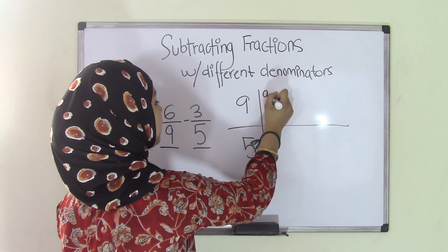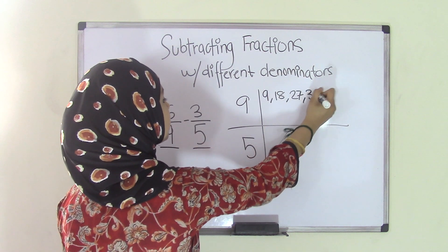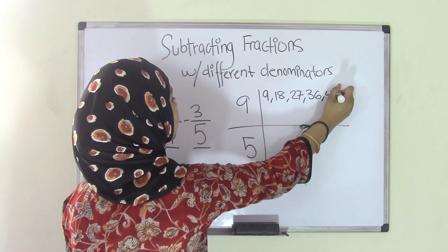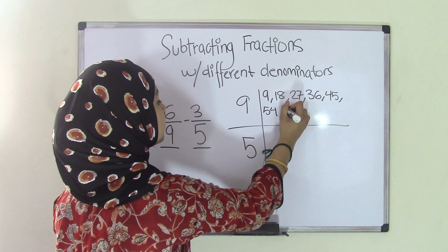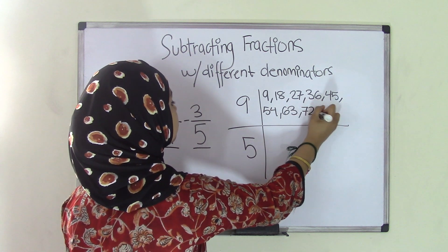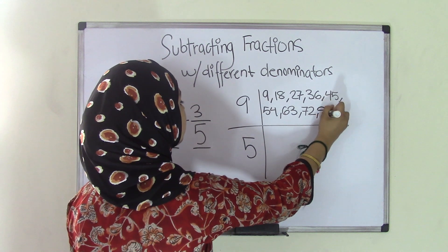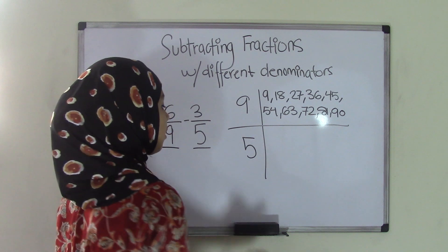So 9 times 1 is 9, times 2 is 18, times 3 is 27, times 4 is 36, times 5 is 45, times 6 is 54, times 7 is 63, times 8 is 72, times 9 is 81, and times 10 is 90. So I'm just going to list them until 10.